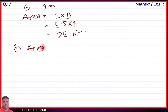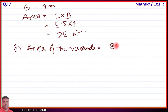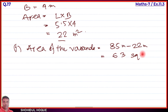Area of the baranda = area with baranda minus area without baranda = 85 meter square minus 22 meter square = 63 meter square. This is the answer to part 1: area of baranda = 63 square meter.